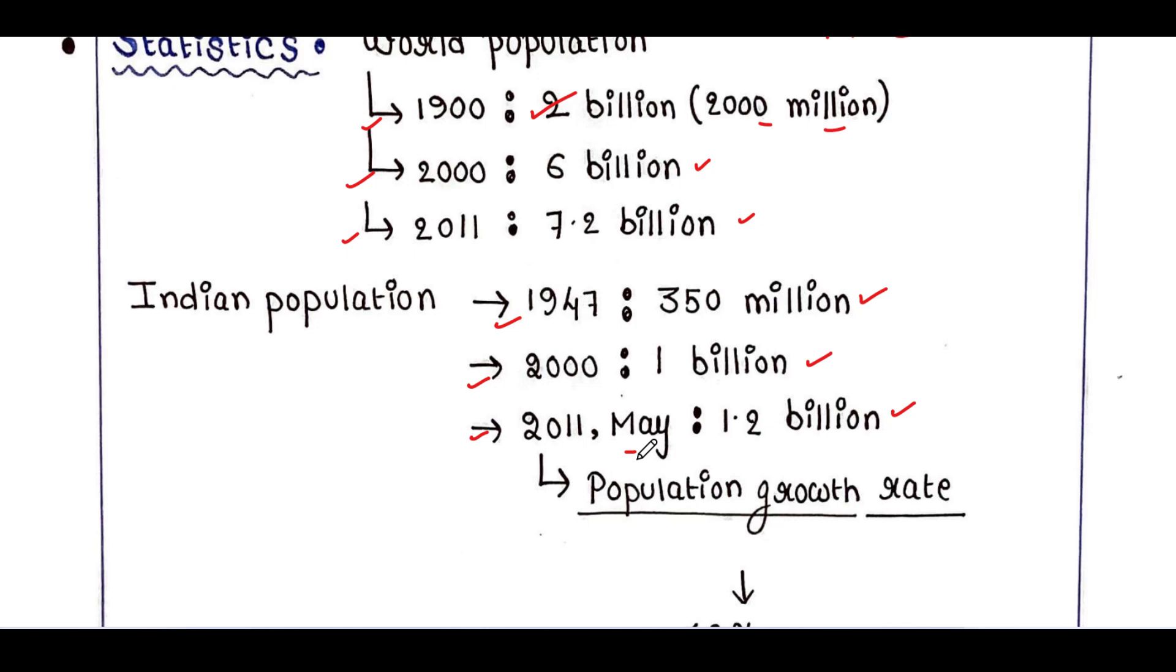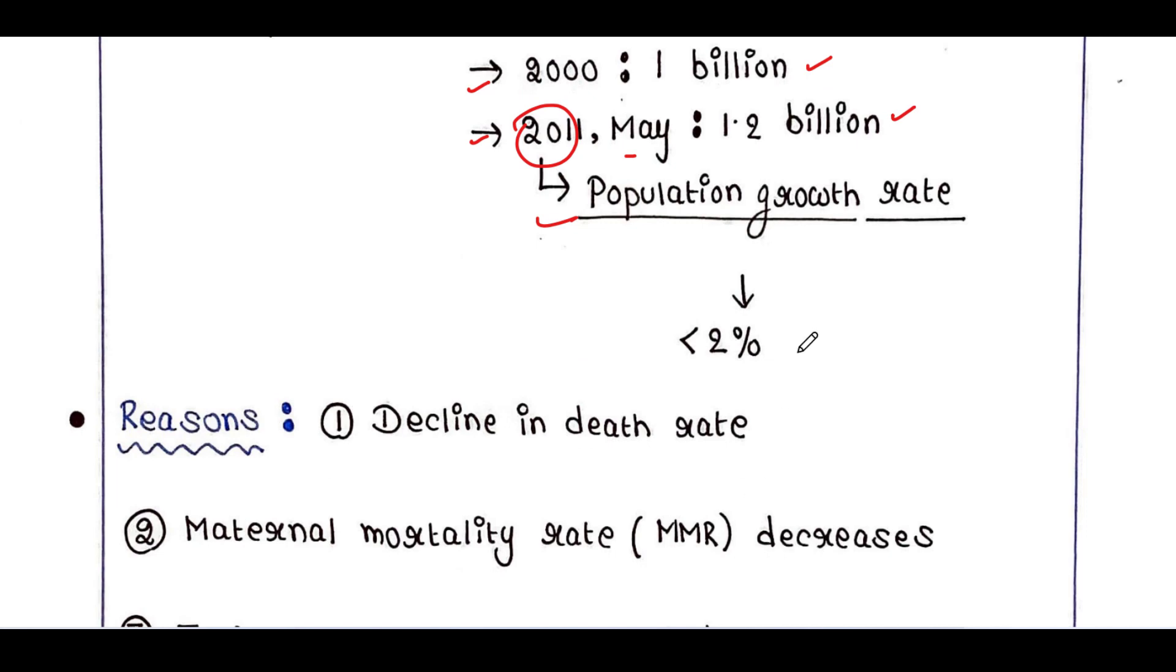And according to 2011 census report, the population growth rate of India was less than 2%. That means 100 people can give birth to 2 babies in a year. So that rate is very high.